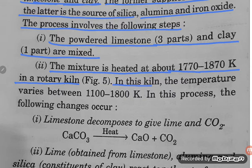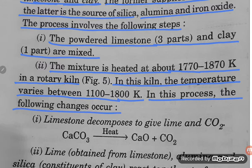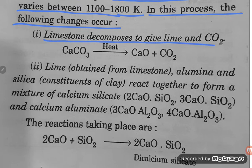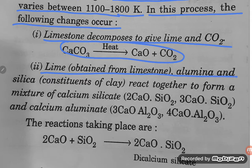In this kiln, the temperature varies between 1100 to 1800 Kelvin. During heating, the following changes occur: first, limestone decomposes to give quicklime (CaO) and CO₂. Then, lime obtained from limestone reacts with alumina and silica from clay to form a mixture of calcium silicates and calcium aluminates.